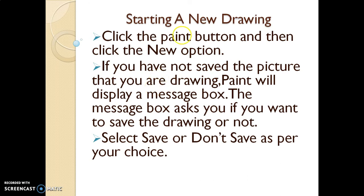To start a new drawing in Microsoft Paint, we just have to click the Paint button and then click the New option. You'll find there's a Paint button, or you can say File — click on File and then click on the New option.